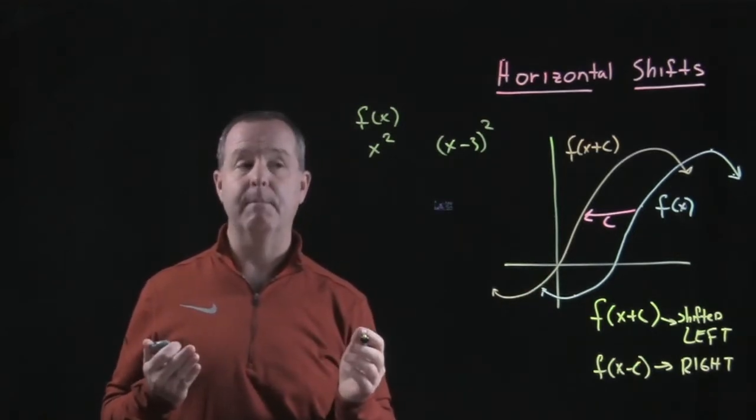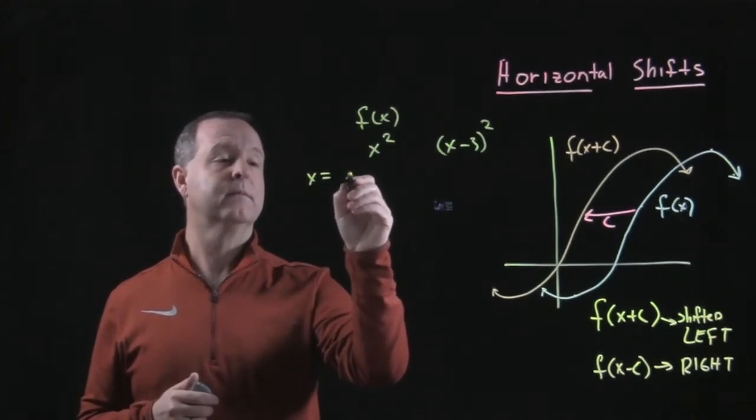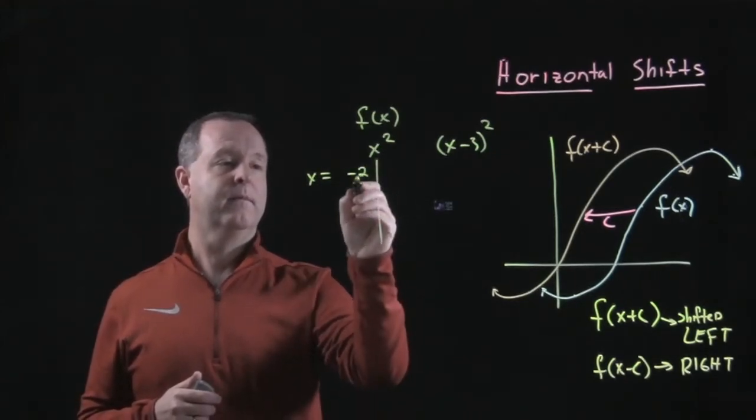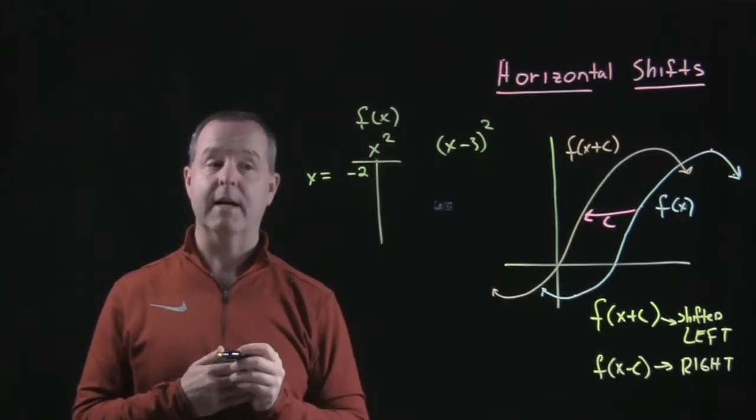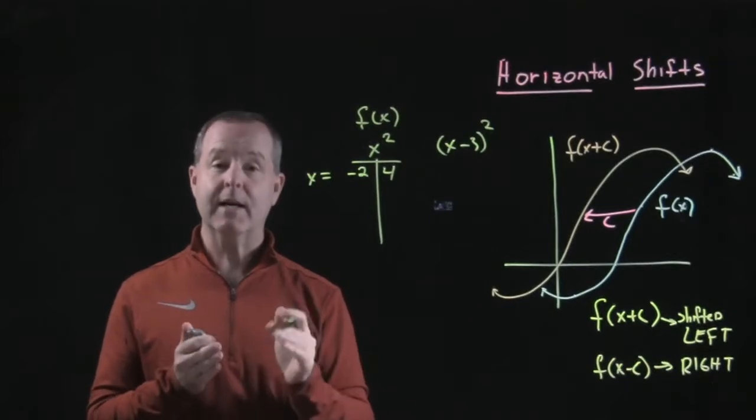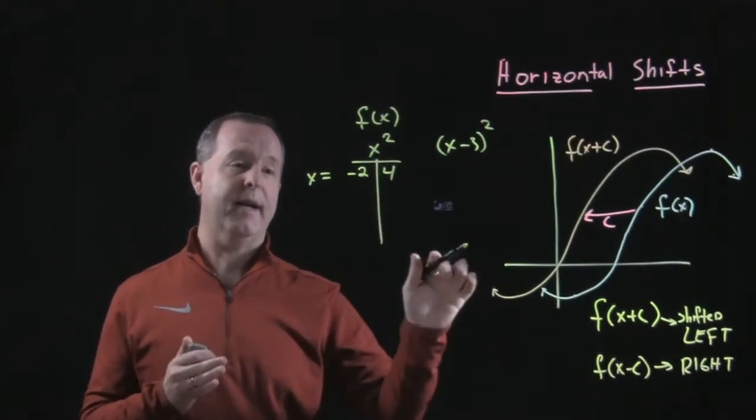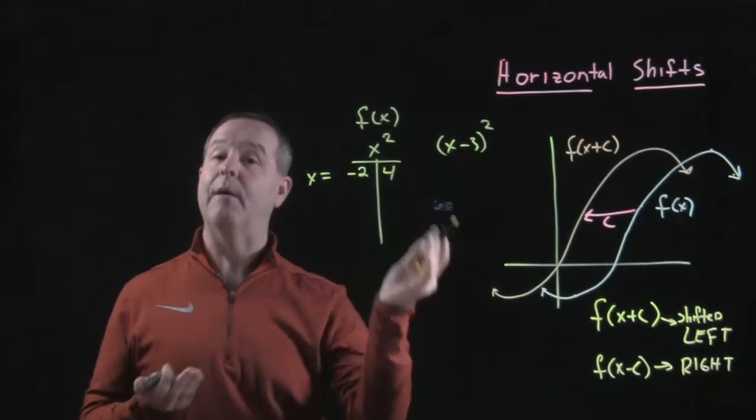So let's look at some numbers and compare. Imagine if my x value is negative 2. What does the function become of negative 2? Negative 2 squared becomes 4. Now let's pick a coordinate that's three spots to the right from negative 2. That would be 1.